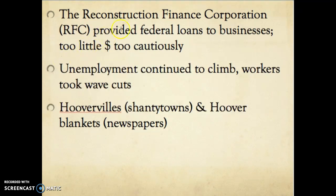What Hoover did establish was the Reconstruction Finance Corporation, or RFC, which provided federal loans to businesses. However, the money was too little, and the loans were too cautiously distributed — meaning some businesses got them and others didn't — so businesses did not boom and unemployment continued to climb. Those people who did have jobs had to take wage cuts.